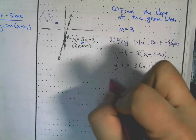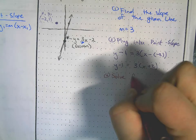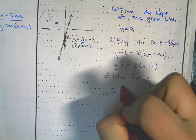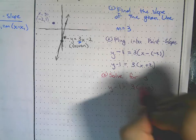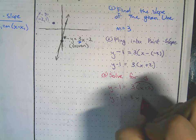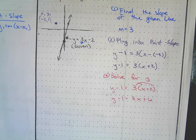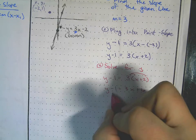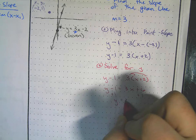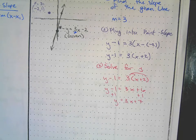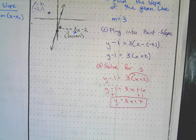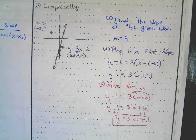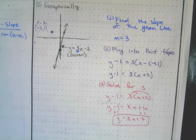Our last step is to solve for y. We distribute: y minus 1 equals 3x plus 6. Then we add 1 to both sides and we're done. That's how we find the equation of a parallel line given a picture of one.